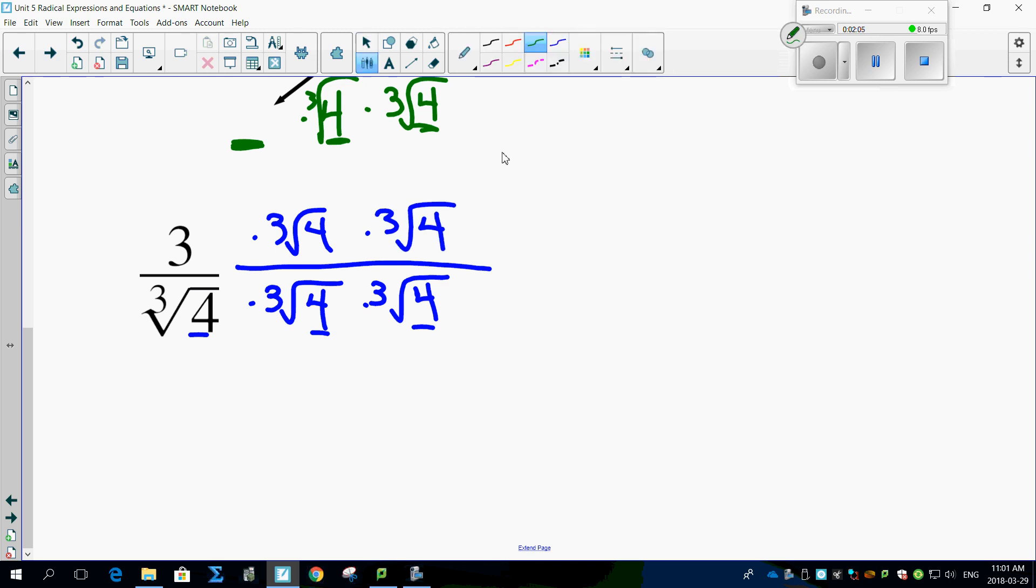Aha! I thought you would. Okay, so watch this. 4 times 4 times 4 gives you the cube root of 64, which we find out is just plain old 4. This gives you here 3 times the cube root of 4 times 4, which is 16.